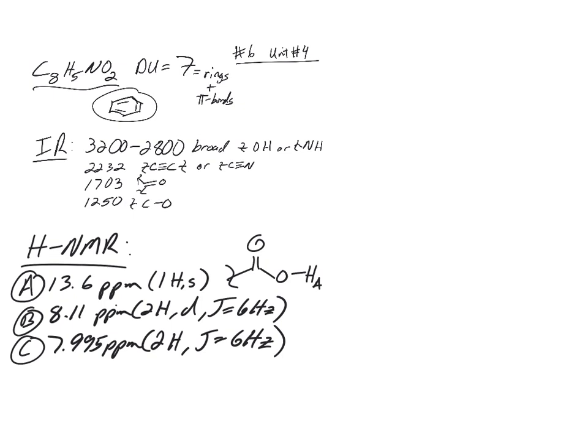Now I have B and C. If you look at B and C, they're both worth two hydrogens. They're both doublets. And they both have the same coupling constant. What does that tell you? They're coupled to each other. They're right next to each other. Right? They're splitting each other. Look at their frequency. Their PPM is at 8 and almost 8 and 7. What does that tell you? What do you think they're on? They're probably on the benzene ring.